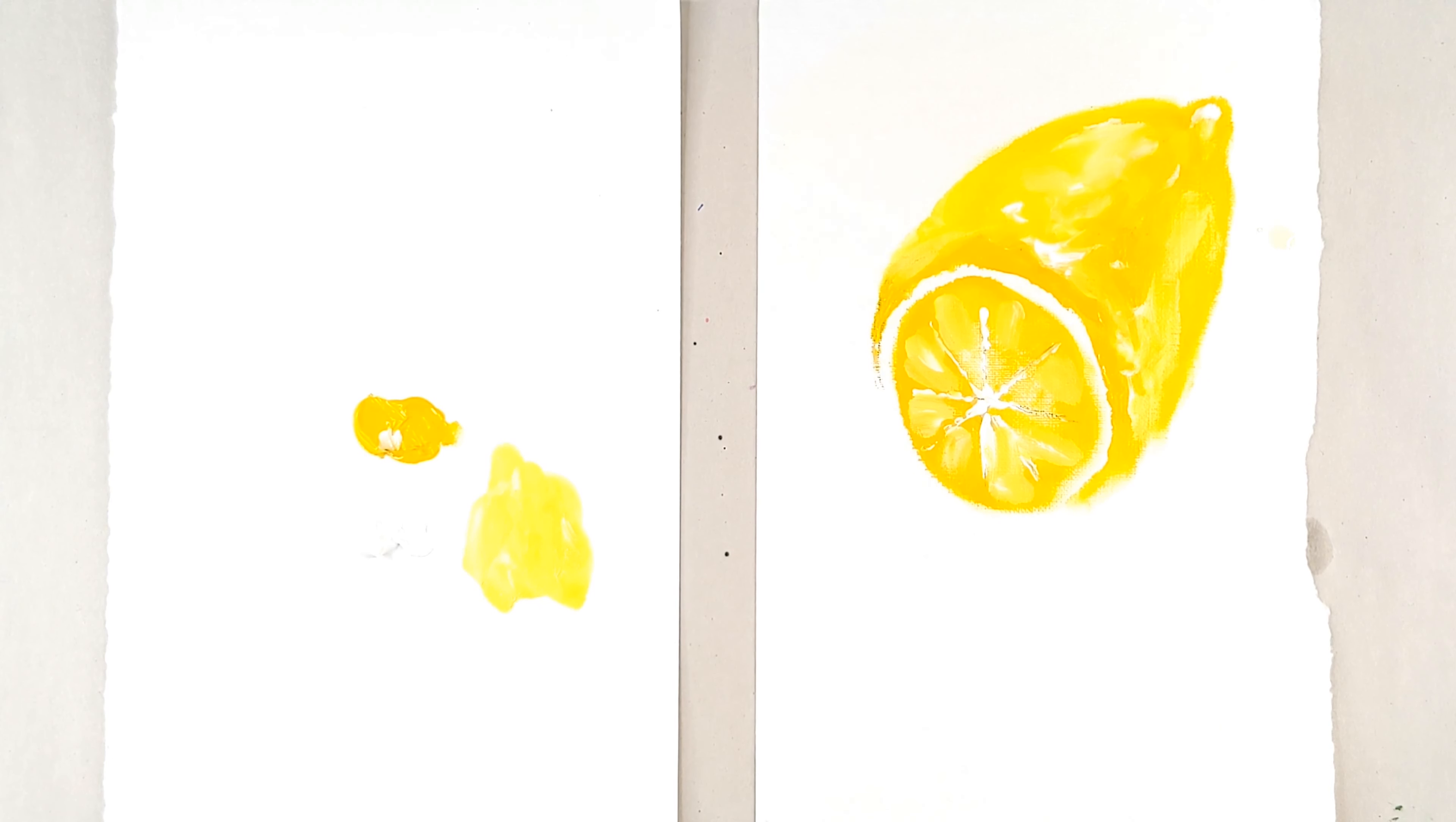There you have it. That is how easy it is to paint a lemon. If you'd like to do the side of a lemon, you just take your yellow and make like a big happy smile.